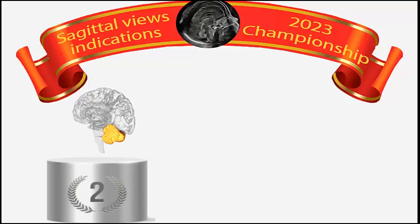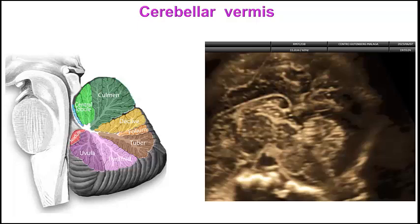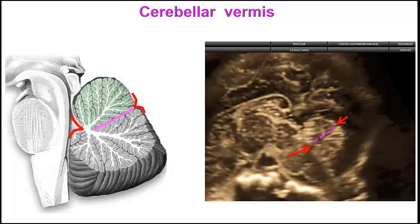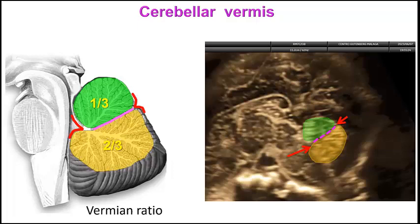The second main contribution of the mid-sagittal plane is for a comprehensive assessment of the cerebellar vermis. For the assessment of the vermis, we need the sagittal plane. The cerebellar vermis has 9 lobes, and in perinatal ultrasound we can distinguish the fastigium of the 4th ventricle and the indentation of the primary fissure that divides the vermis in two portions. The superior portion should be one-third and the inferior portion two-thirds of the total area of the vermis — this is the vermis ratio.